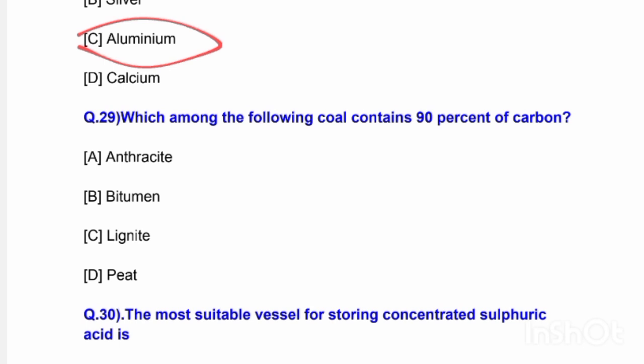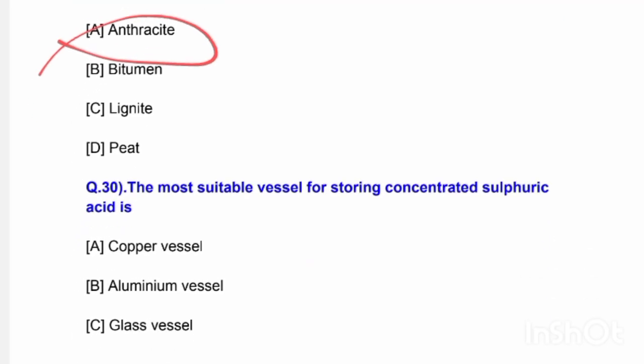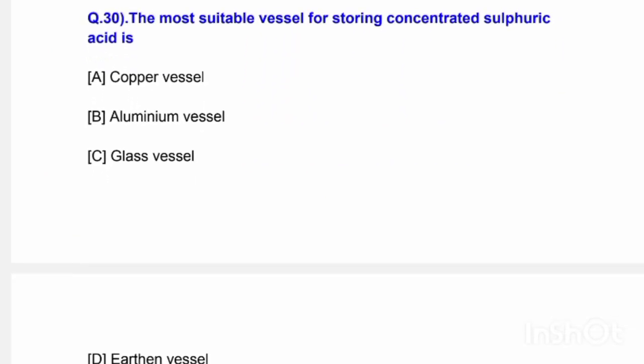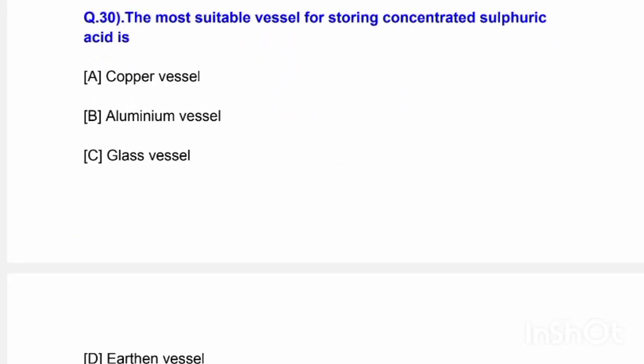Next question: Which among the following four contains 90% of carbon? Options are anthracite, bitumen, lignite, and peat. The correct answer is option A — anthracite.